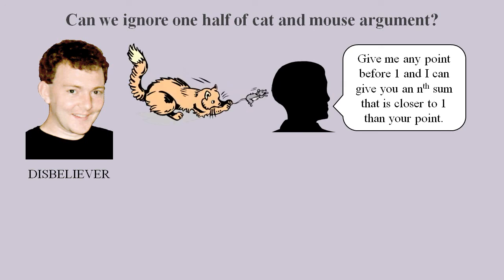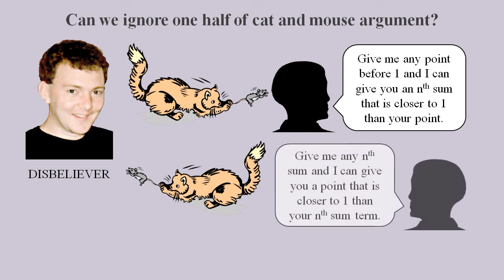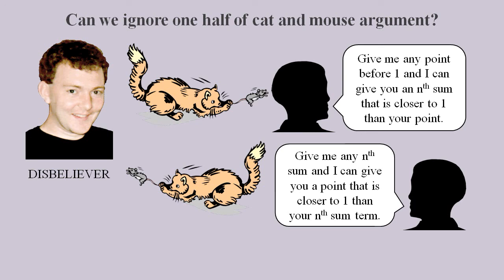But this is a cat and mouse argument. And we can easily switch the roles of cat and mouse around. By saying, you give me any nth sum and I can give you a point that's closer to 1 than your nth sum. And since this will work for all possible nth sums, points must exist between 0.9 recurring and 1.